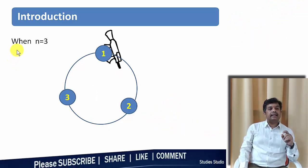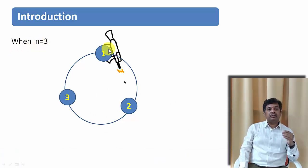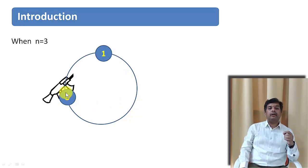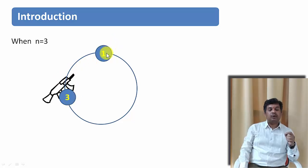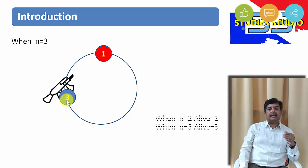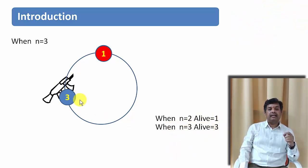Now assume there are three persons. When N equals 3, the first person has the gun and shoots person 2 immediately to his right. After executing person 2, he passes the gun to the next alive person — person 3. Person 3 now kills his immediate right, which is person 1. So person 1 is killed and person 3 is alive. When N equals 2, person 1 lives; when N equals 3, person 3 is alive.